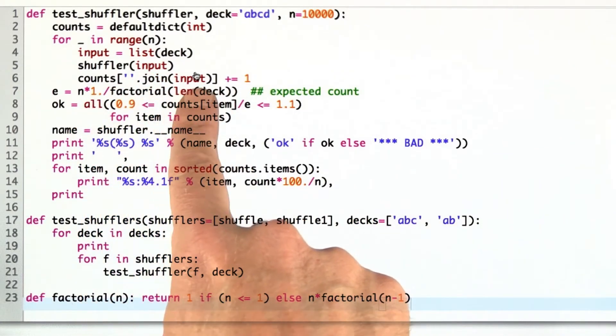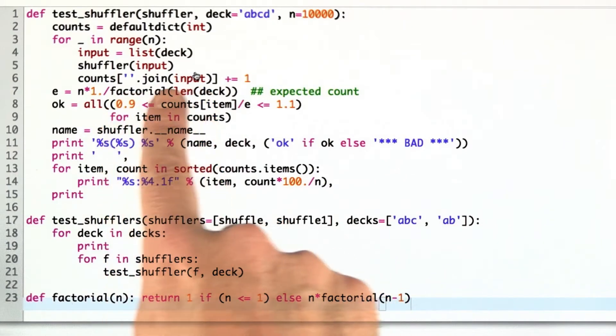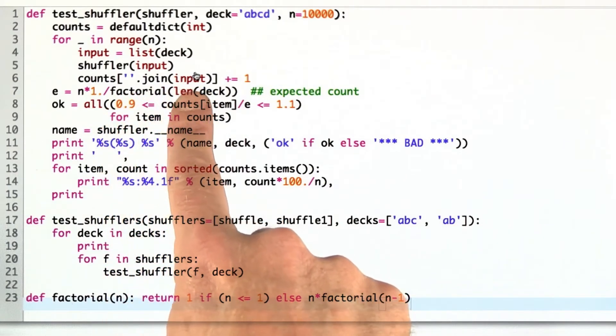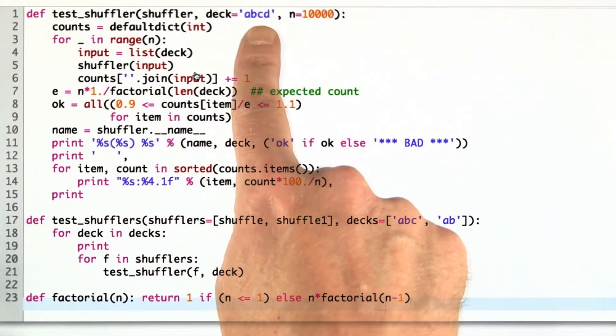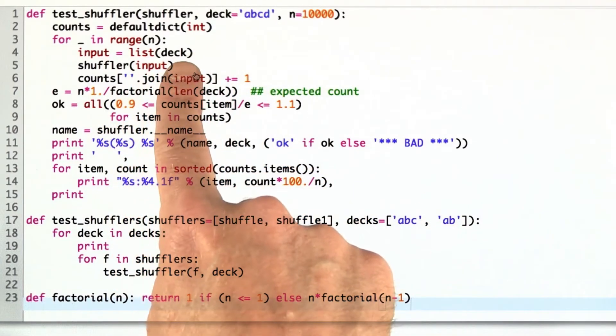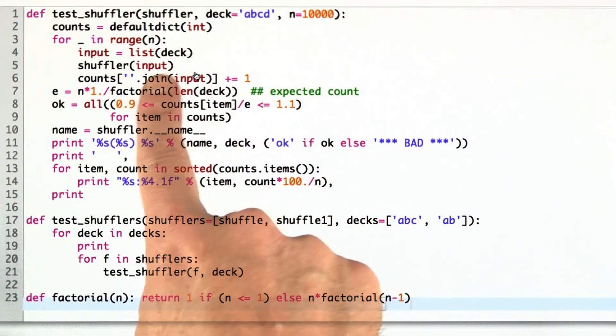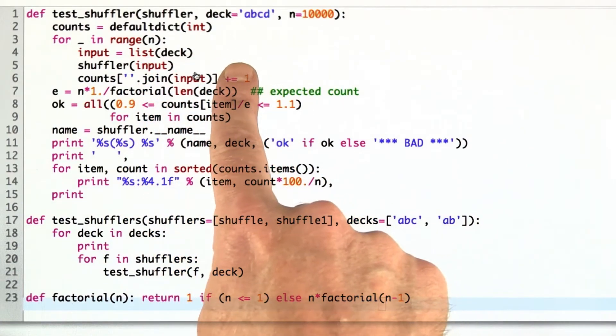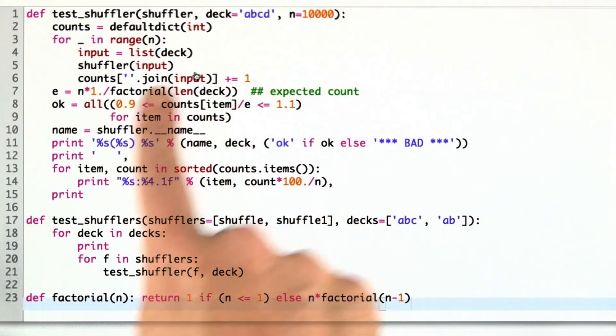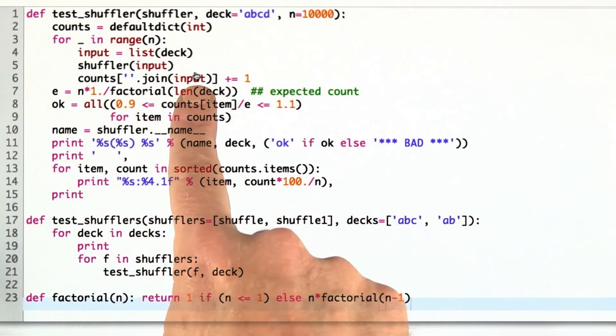The result here is a list of items. We're going to join the list of items together back into a single string to make them smaller and easy to deal with. Then we just increment that count. A, B, C, D comes in. We make a list. We make the list A, B, C, D. We shuffle that. Maybe we get B, C, A, D. Then we increment the count for that result.